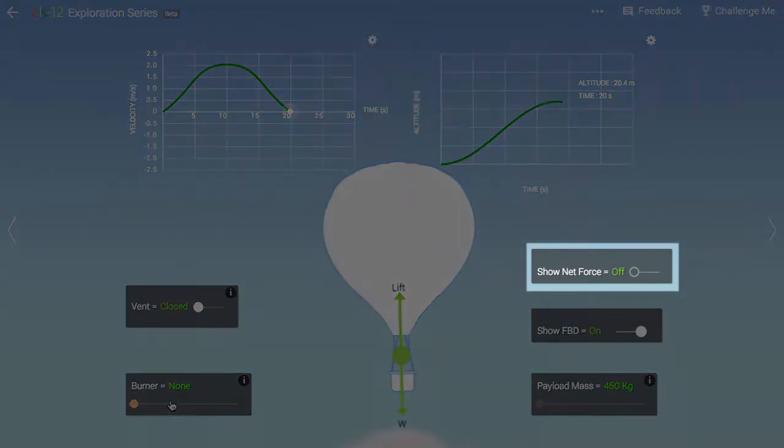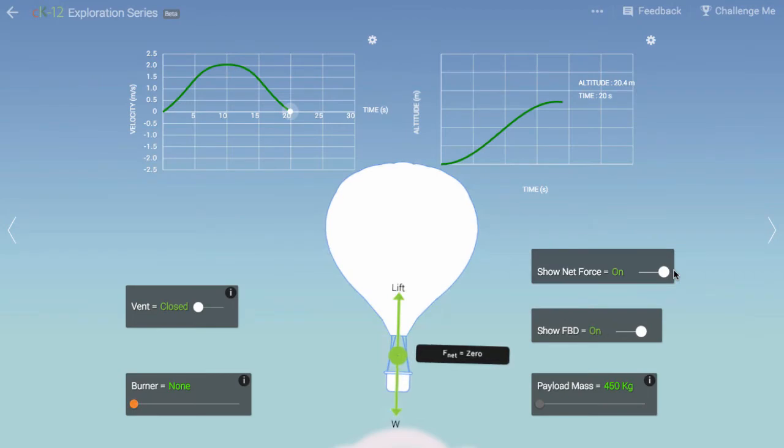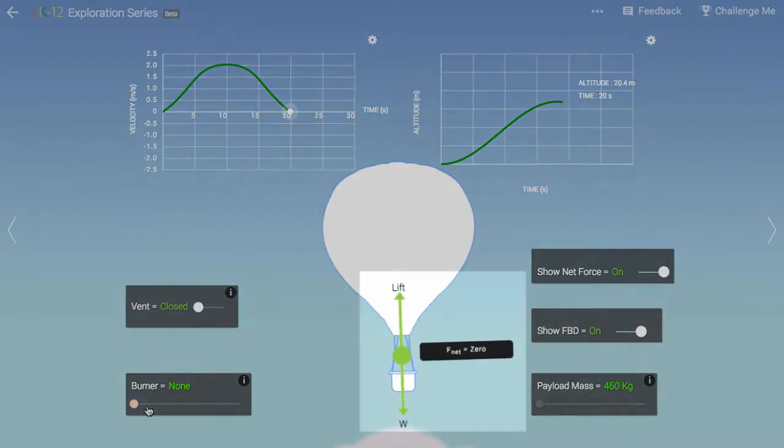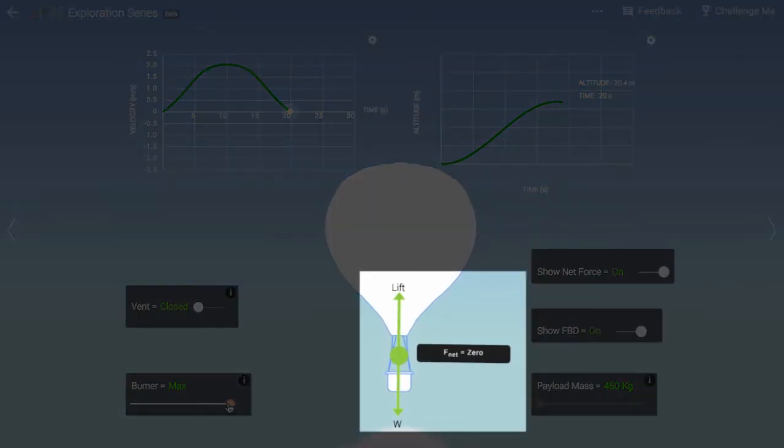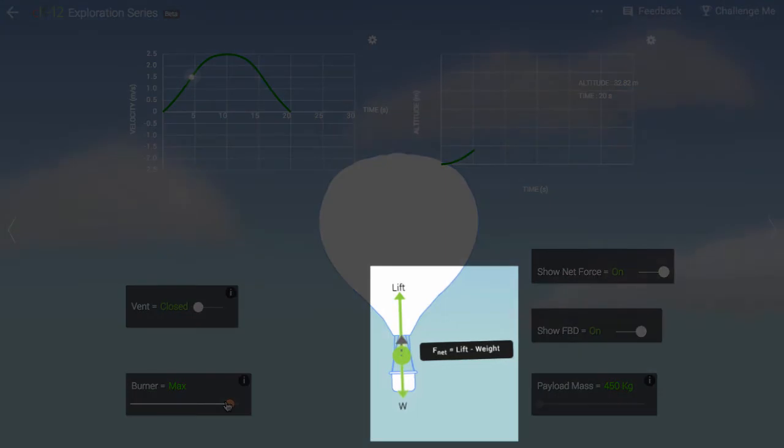The net or total force acting on the balloon is the lift force minus the weight. In other words, it is the amount by which the lift force exceeds the weight. If the net force is positive, pointing upwards, the balloon accelerates upward, as predicted by Newton's second law.